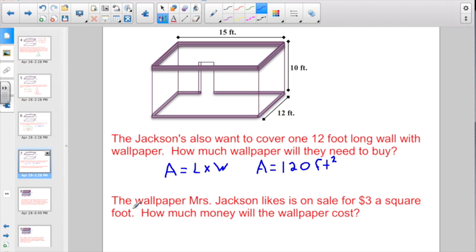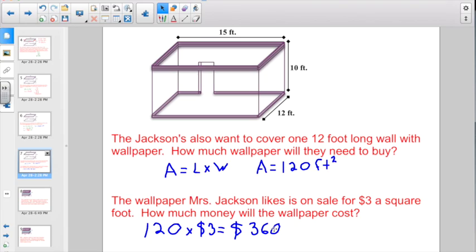But we're not done yet. Now it's saying the wallpaper Mrs. Jackson likes is on sale for $3 a square foot. How much money will the wallpaper cost? Can we do this one mentally? We need 120 square feet of wallpaper. It's $3 a square foot. So the total cost is going to be $360.